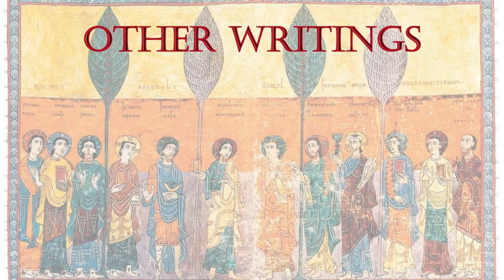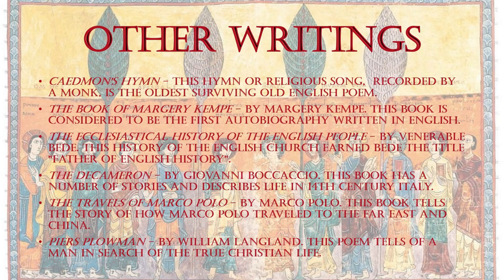Other writers. Caedmon's Hymn — this hymn, or religious song, recorded by a monk, is the oldest surviving Old English poem. The Book of Margery Kempe by Margery Kempe is considered to be the first autobiography written in English. The Ecclesiastical History of the English People by Venerable Bede — this history of the English church earned Bede the title Father of English History. The Decameron by Giovanni Boccaccio describes life in 14th-century Italy.